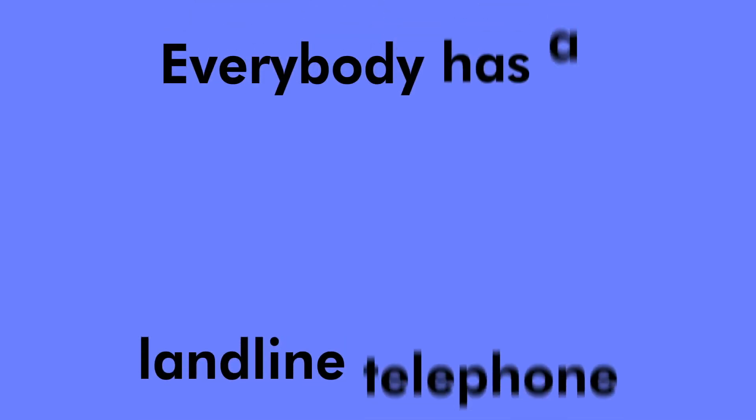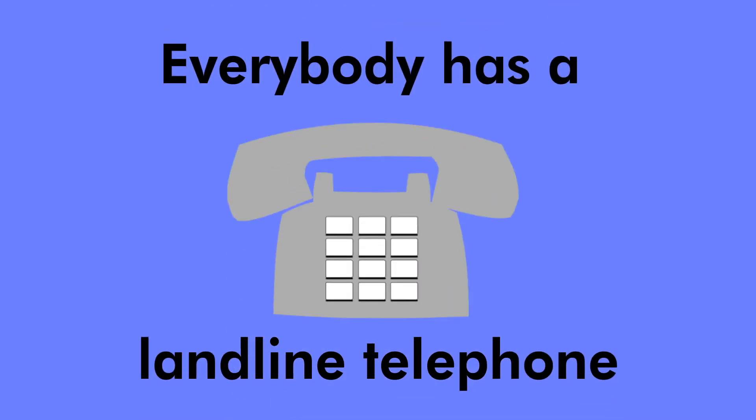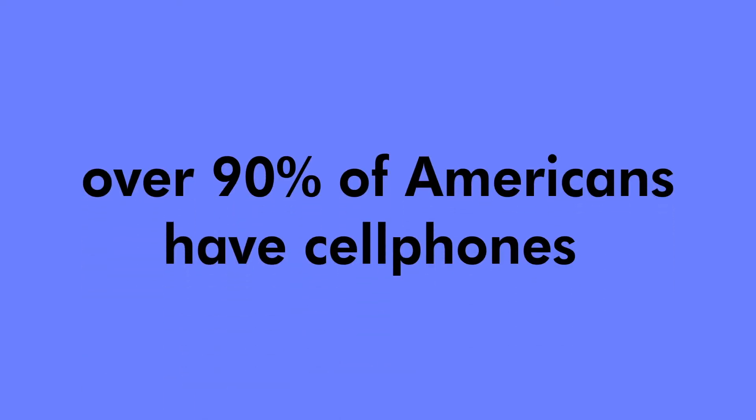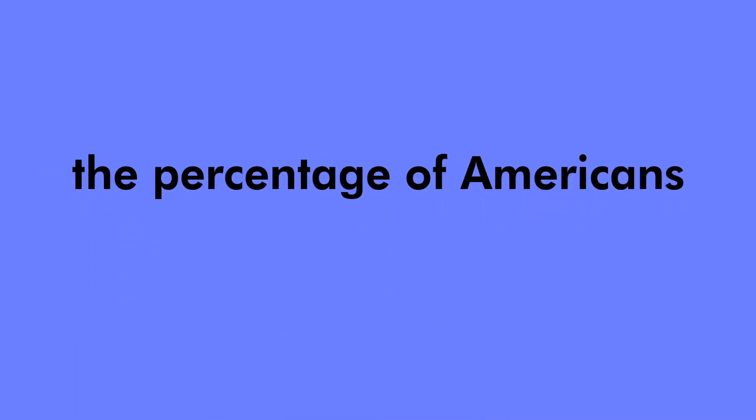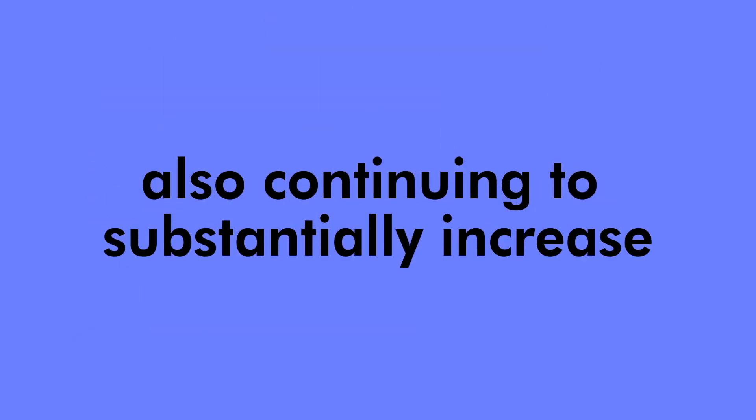Previously, the big trend was everybody has a landline telephone. Now I think the trends are the vast majority, I believe over 90% of Americans have cell phones. I think around 80% of Americans have smartphones. And the percentage of Americans on social media is also continuing to substantially increase. How do we make it so any American has the same chance of being picked by a pollster? Increasingly, the odds are that going through social media or cell phones might be the way to do it.